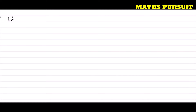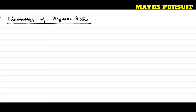We are going to learn about the important identities of square root. These are most important so that we can understand and answer questions immediately. If we learn these identities then we can easily answer the given questions.